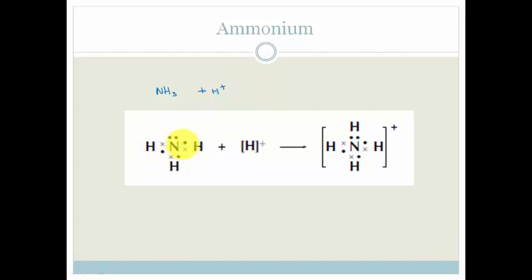And if you look at the structure, if you look at the Lewis diagrams, you can see that here is a shared pair of electrons between the nitrogen and the hydrogen, here is a shared pair of electrons, and here is a shared pair of electrons. And this hydrogen, again, doesn't have any electrons of its own.